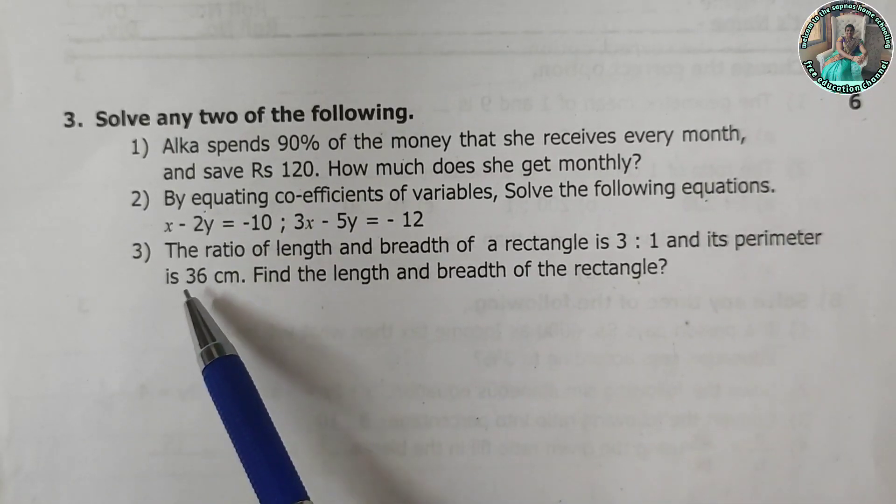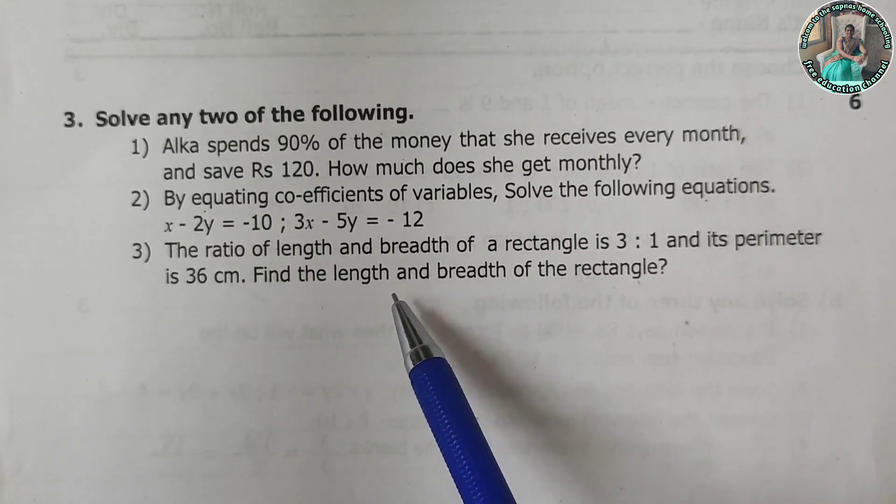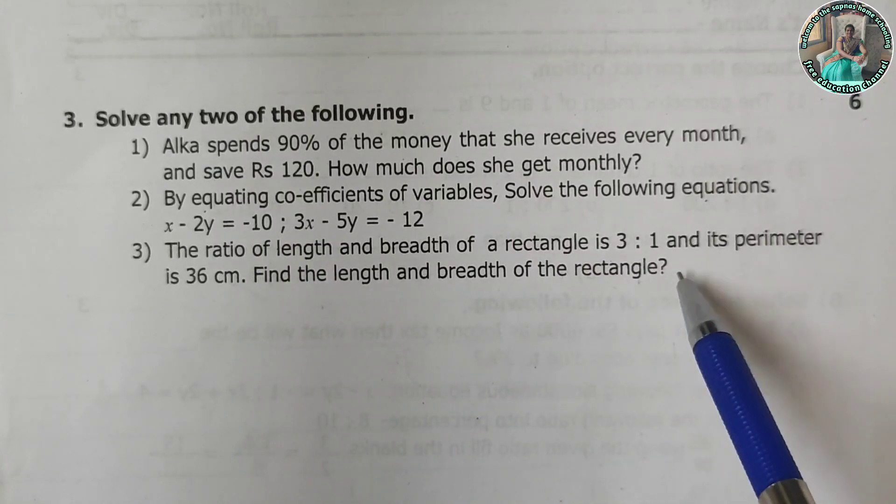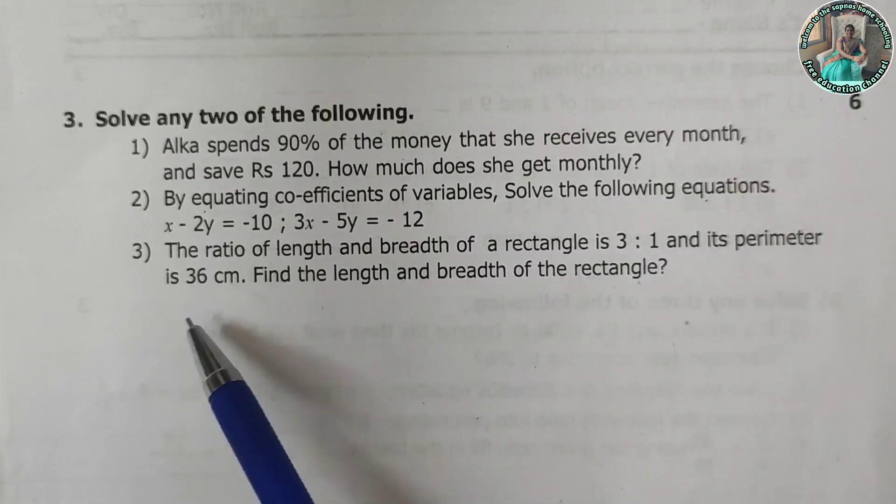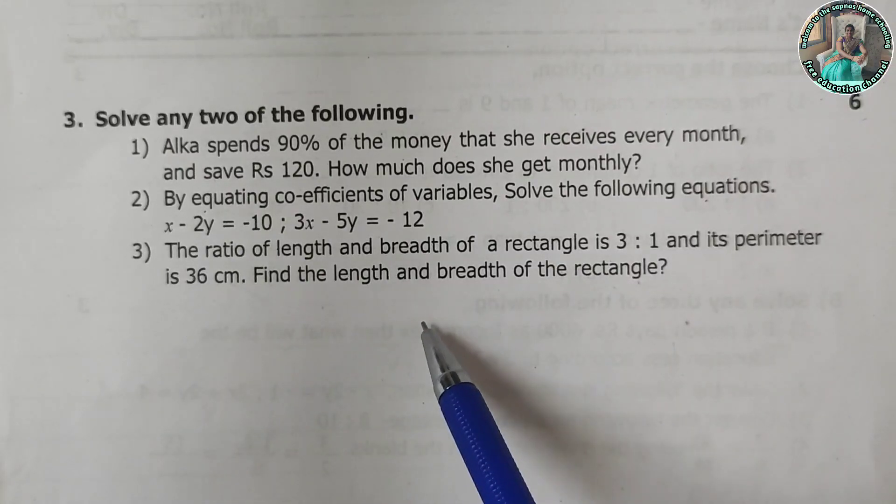The ratio of length and breadth of a rectangle is 3 is to 1, and its perimeter is 36. Find the length and breadth of the rectangle.